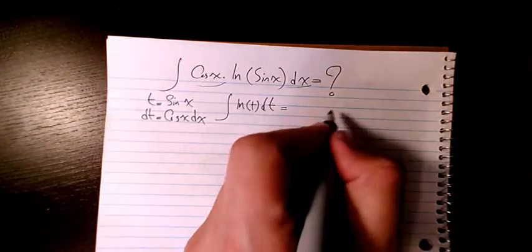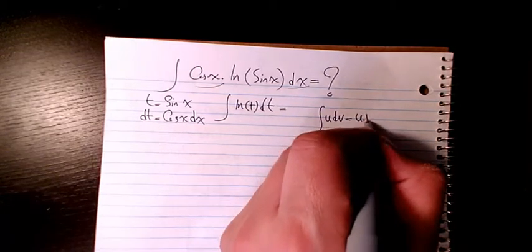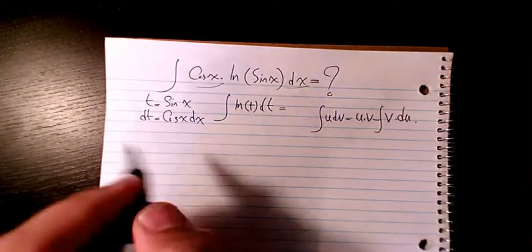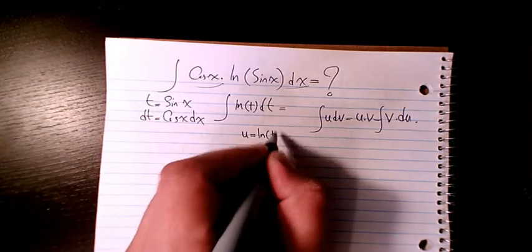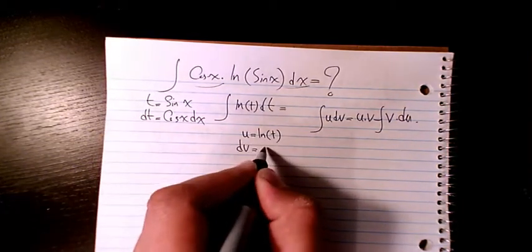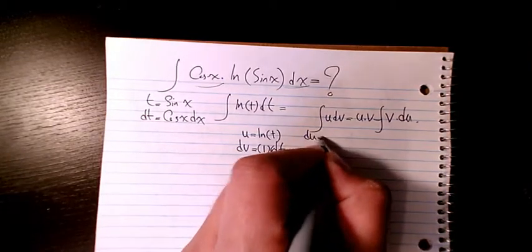You know it is going to be integration of u dv equals u times v minus integration of v du. So u will be ln t, dv will be 1 dt, so du is 1 over t dt, and v is just t.